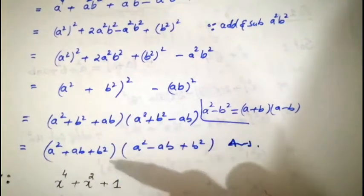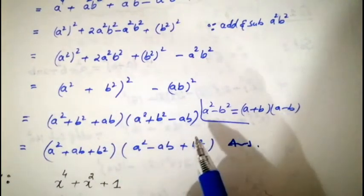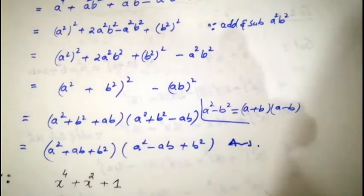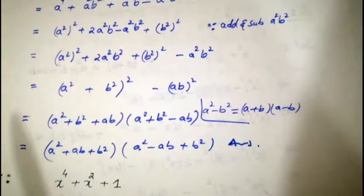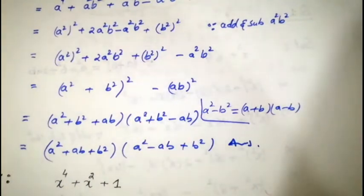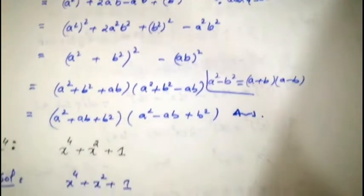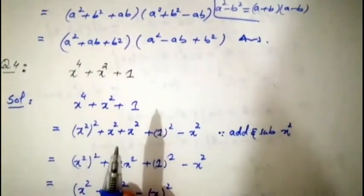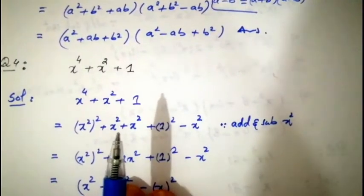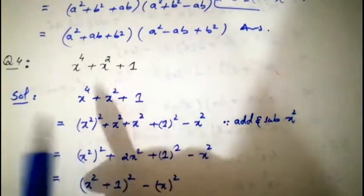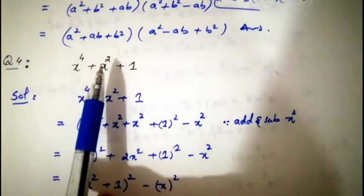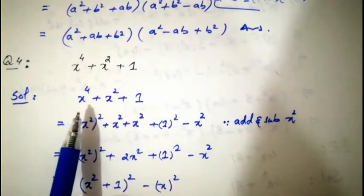We can also write ab first or last — it doesn't matter. So that was the answer to question number three. Now question number four: x⁴ + x² + 1.